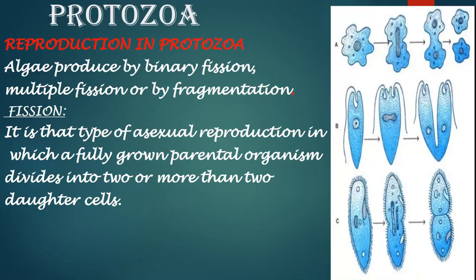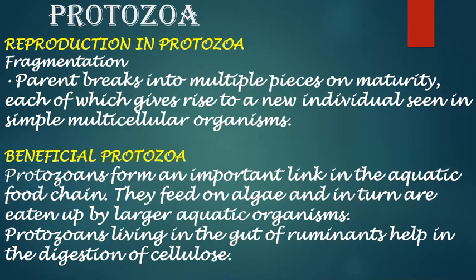Reproduction in protozoa: protozoa reproduce by binary fission, multiple fission or by fragmentation. Fission is a type of asexual reproduction in which a fully grown parental organism divides into two or more than two daughter cells. In fragmentation, the parent breaks into multiple pieces on maturity, each of which gives rise to a new individual, as seen in simple multicellular organisms like protozoa.